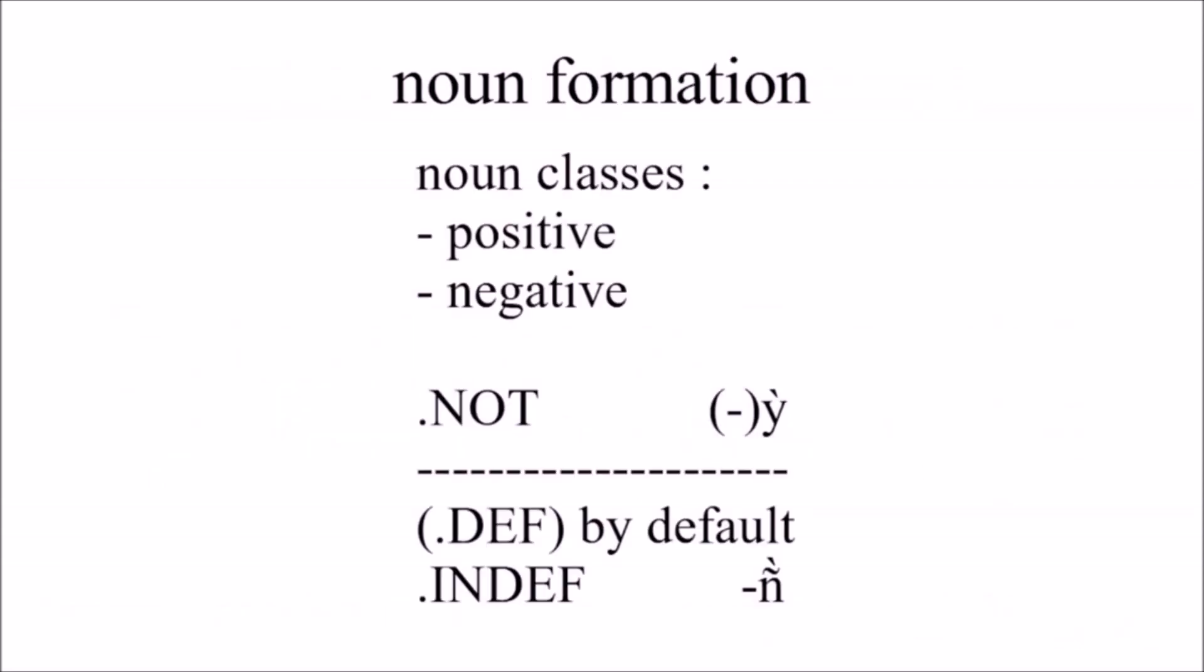And now, noun classes. They're not like male or female. They're positive and negative. Obviously, that's self-explanatory. Things that we deem as positive are positive, and vice versa. So the markers you can put on a noun, the not marker, which is pronounced prrr.